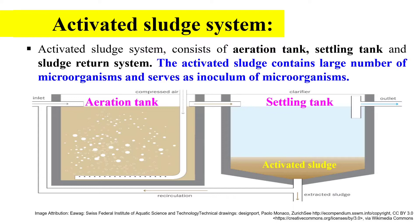After mixing of sludge, the sewage is placed in the aeration tank, where it is continuously aerated for 6 to 8 hours. During this aeration period, the microorganisms oxidize the organic matter present within the sewage water to form carbon dioxide, water, and NO3.